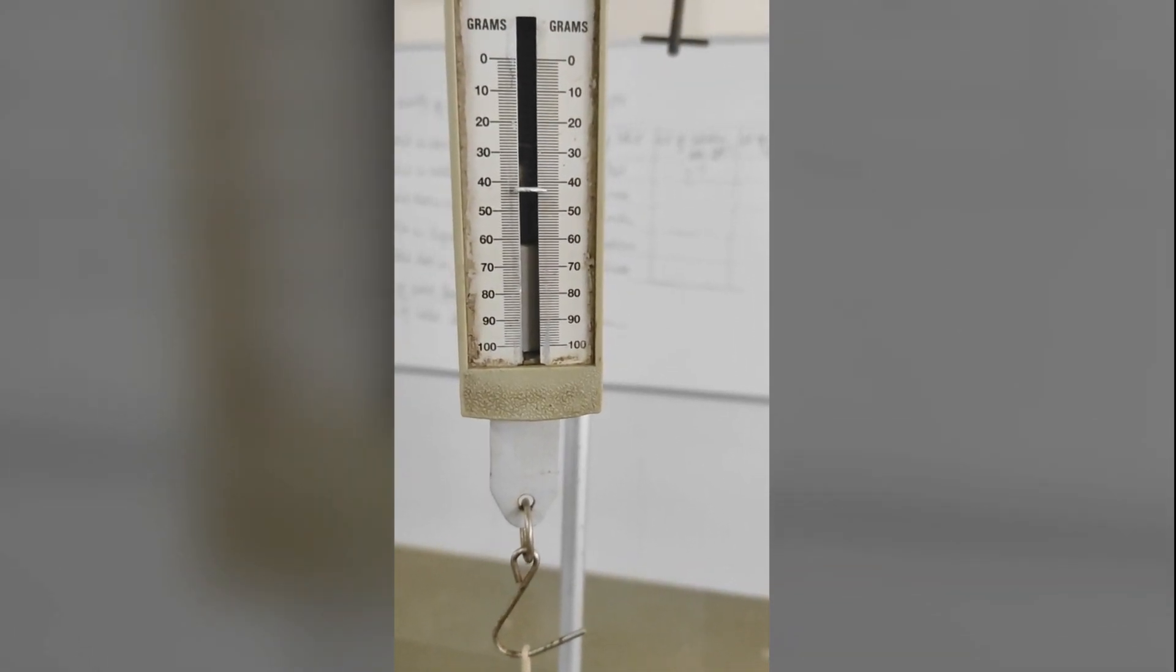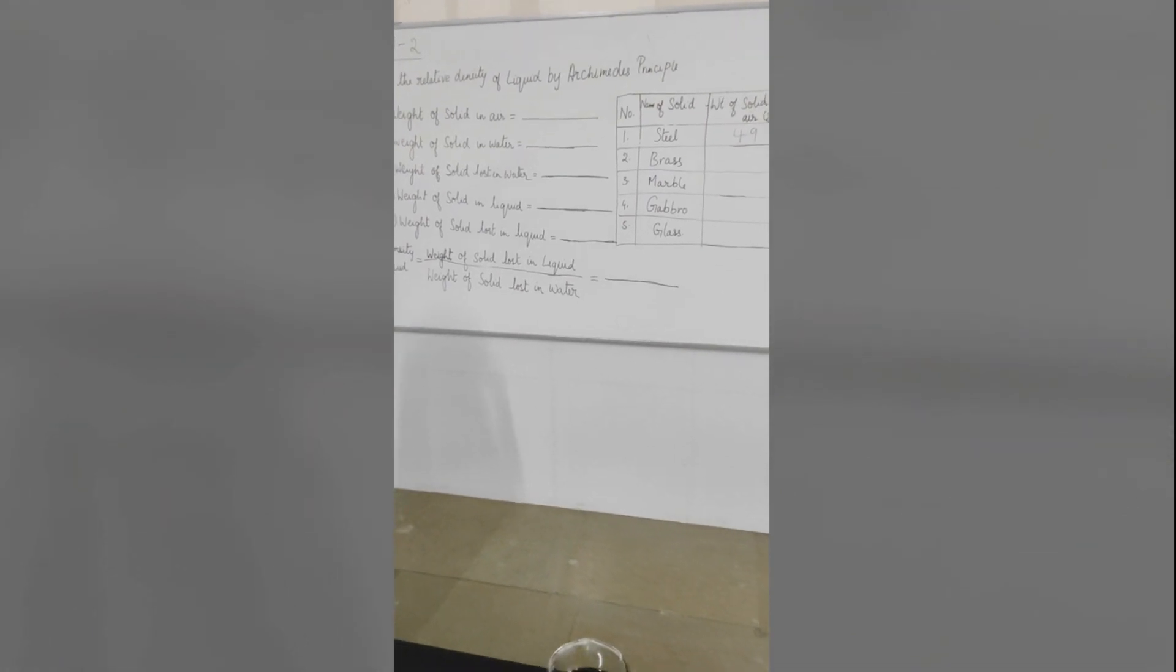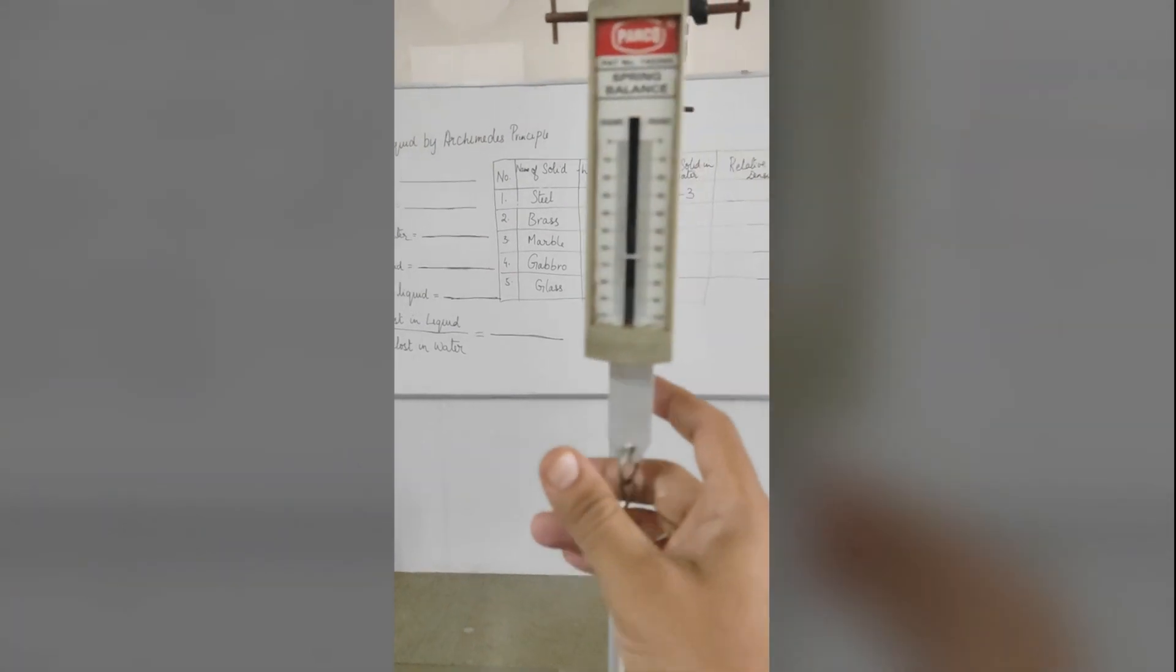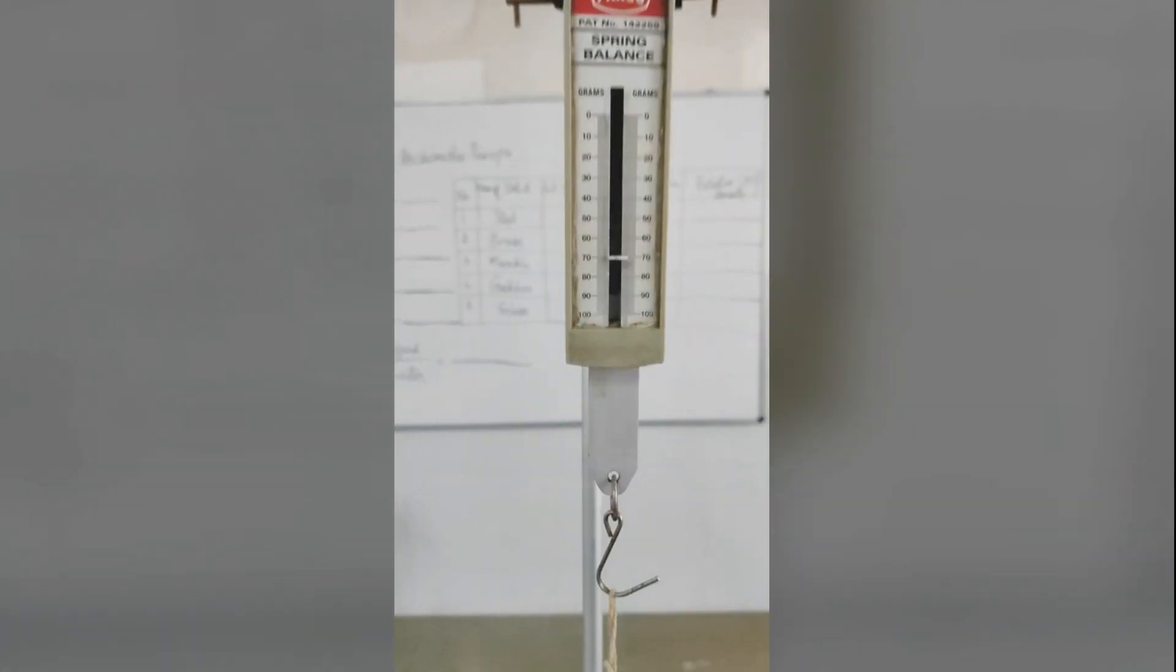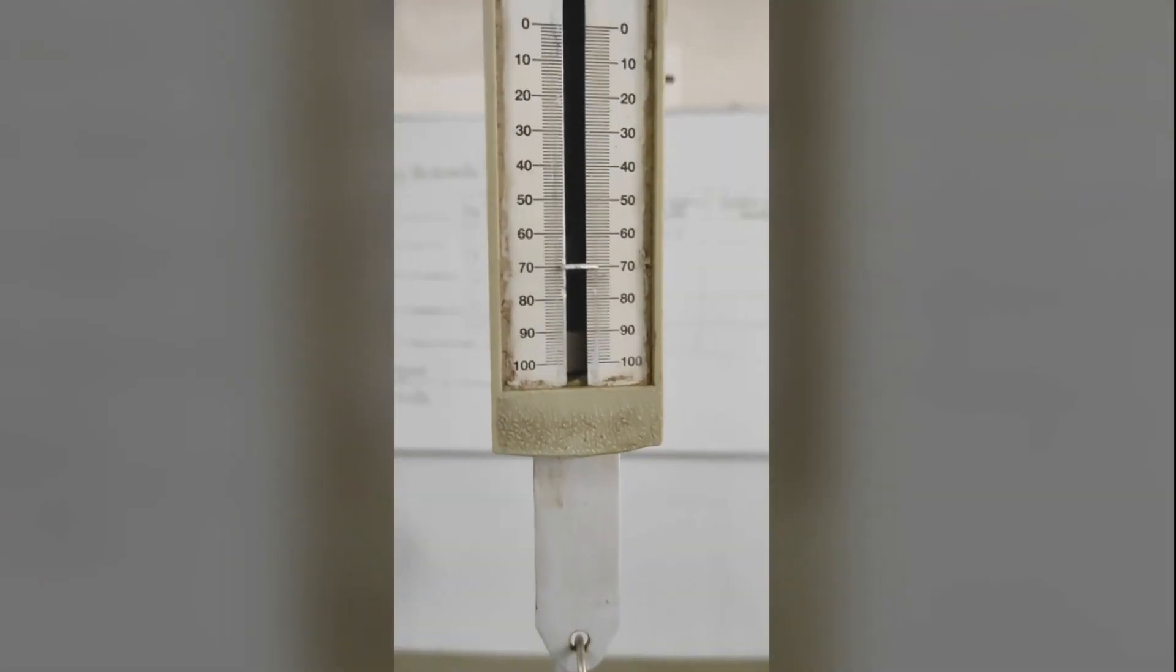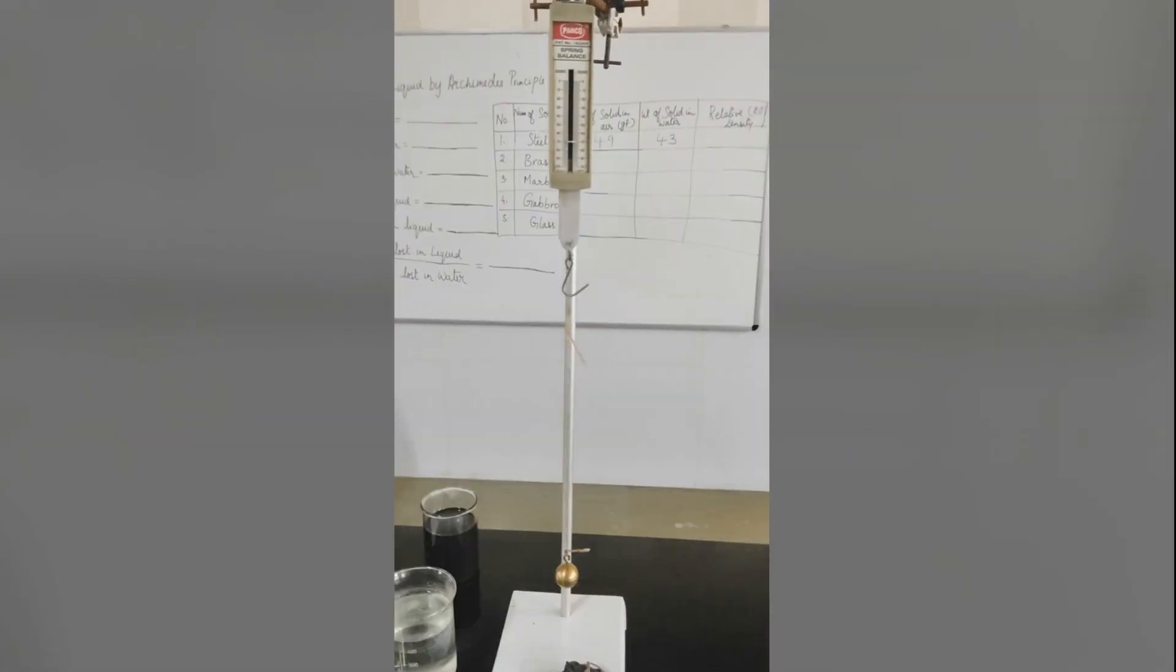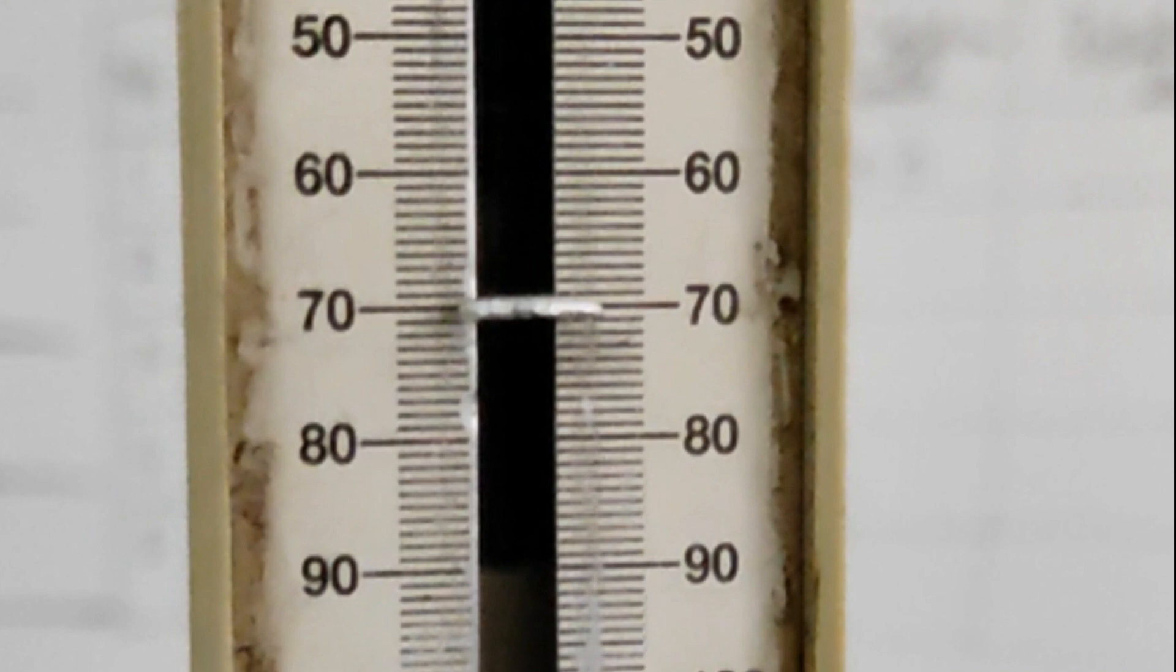We have to repeat the same procedure for all other solid objects. Let me just make this spring balance stable. Now I am taking brass object and its weight in air is 70 gram force.